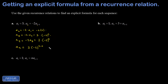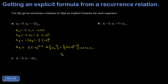So the sequence can be written as { 3 · (-2)^(n-1) }, where it's implicitly understood we're starting at n = 1. It's also okay to start a sequence at n = 0 as long as you let the reader know, so that alternative form is equally valid.